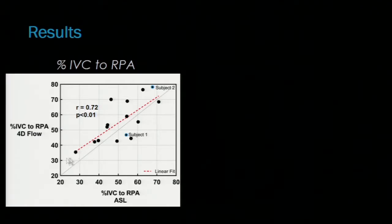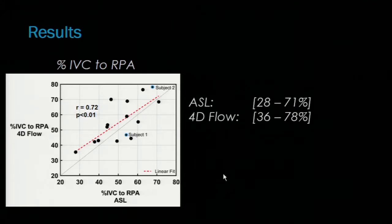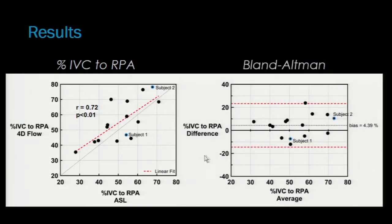These are the results across all subjects — the percent of IVC flow towards the right lung, measured with 4D flow and with ASL, showing good agreement. With ASL, the percent of IVC flow towards the right lung ranged from 28% to 71% across all subjects, and with 4D flow that range was 36% to 78%. We see a wide range of flow towards the left and right lung, varying from the evenly split value of 50%. Bland-Altman analysis showed a relatively low bias of 4% between ASL and 4D flow.